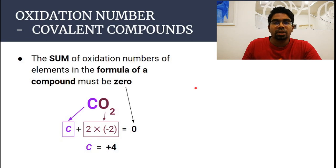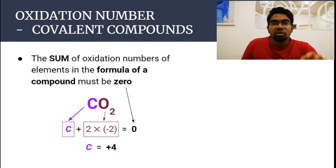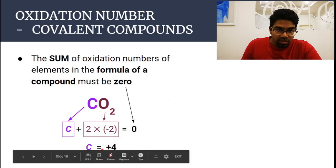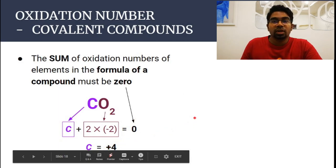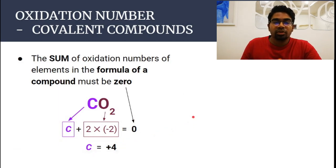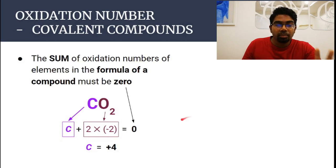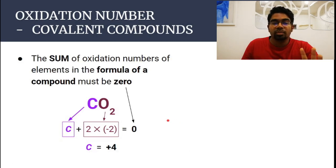An important thing to remember: when writing oxidation numbers, please don't forget to write the positive sign in front of your answer. You cannot write the oxidation number of carbon as just four — you must write plus four. Please keep that in mind.